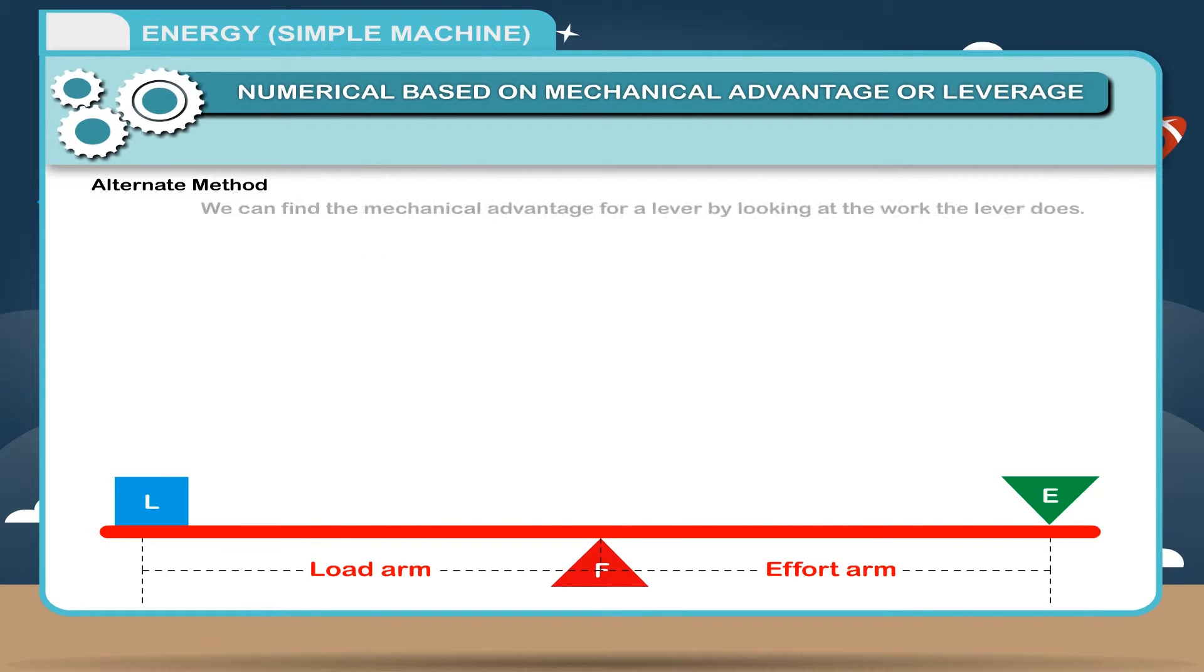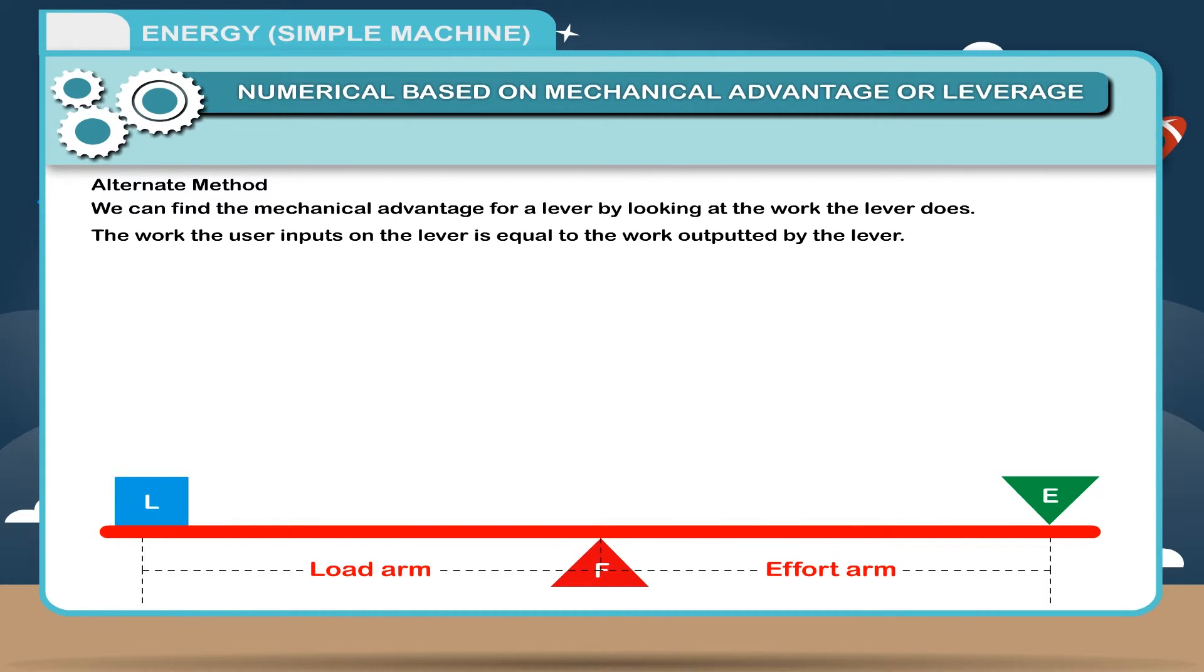Alternate method: We can find the mechanical advantage for a lever by looking at the work the lever does. The work the user inputs on the lever is equal to the work outputted by the lever. That is, work I is equal to work O. Since work is equal to force into distance, therefore, FE DE is equal to FI DI.